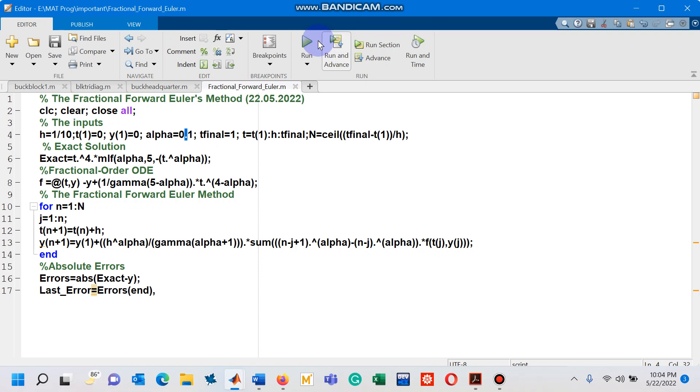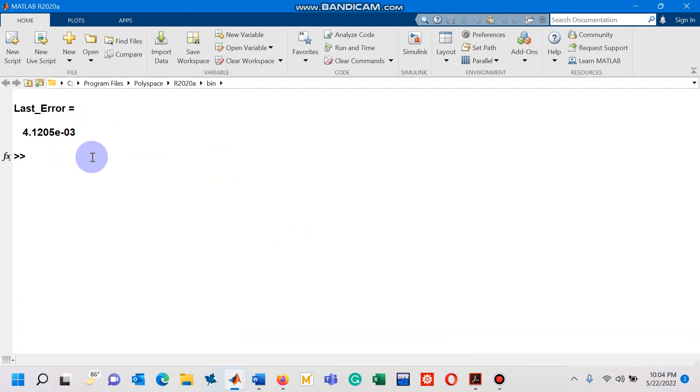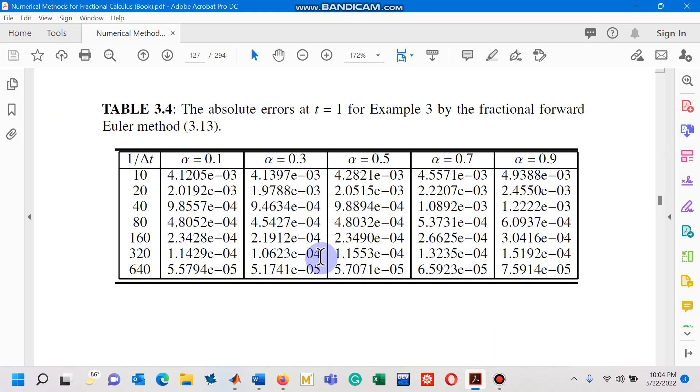Let's run this script and then see its result on the command window, which is last error is 4.1205e to the power 10 to the power minus 3. Let me also confirm it from the table: 4.1205e to the power minus 3, that's correct.